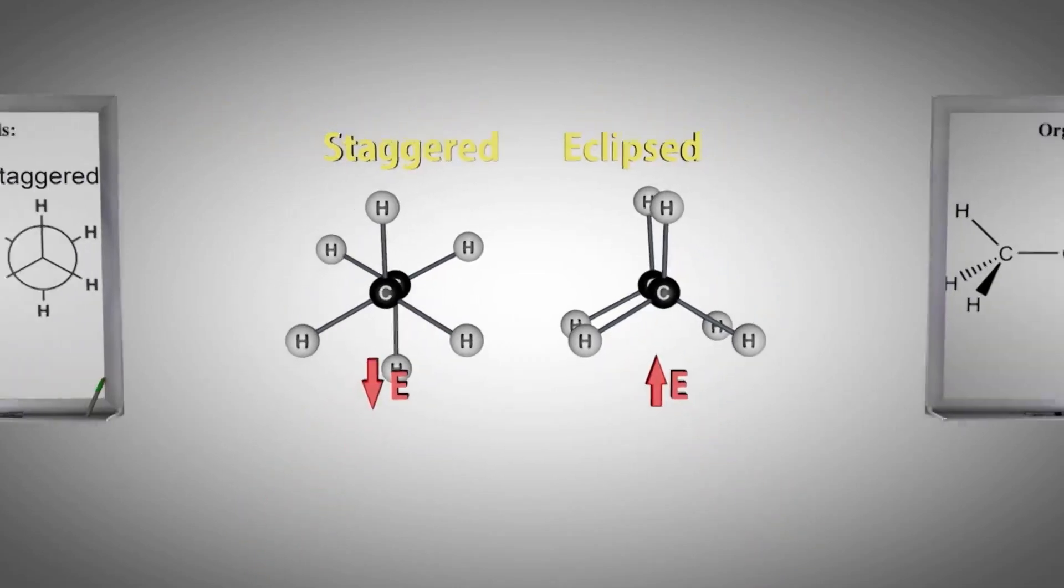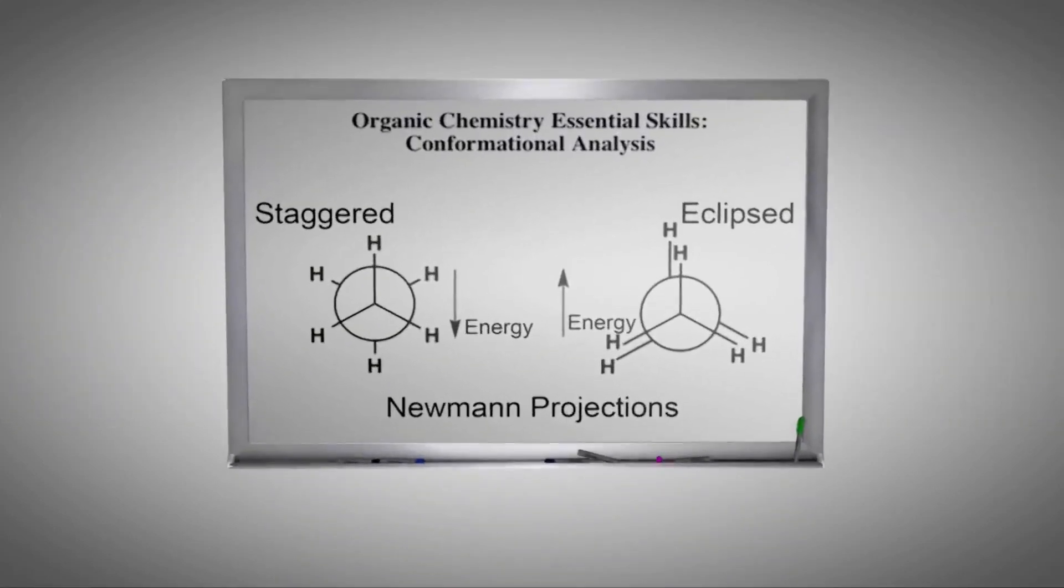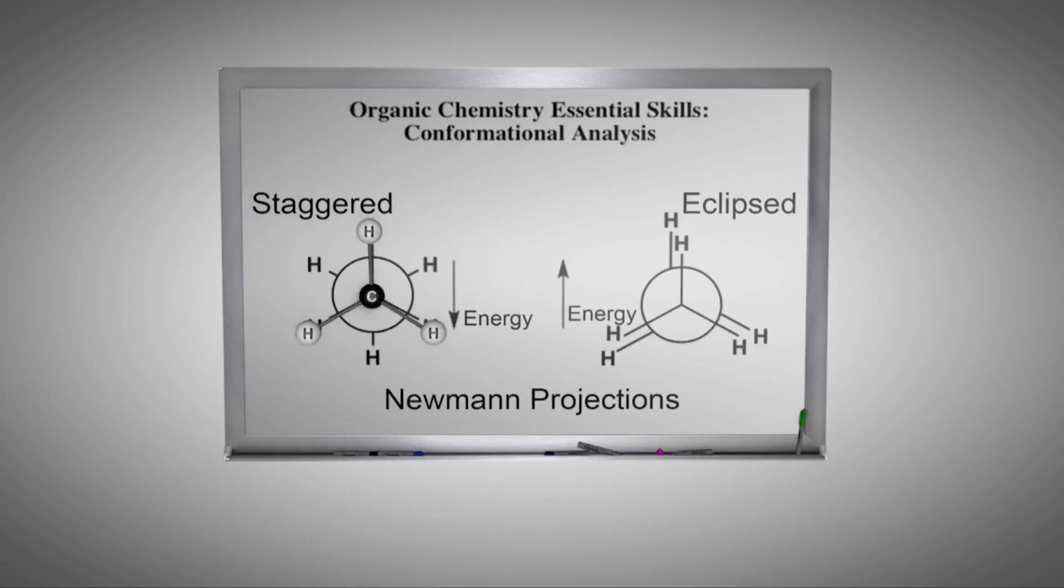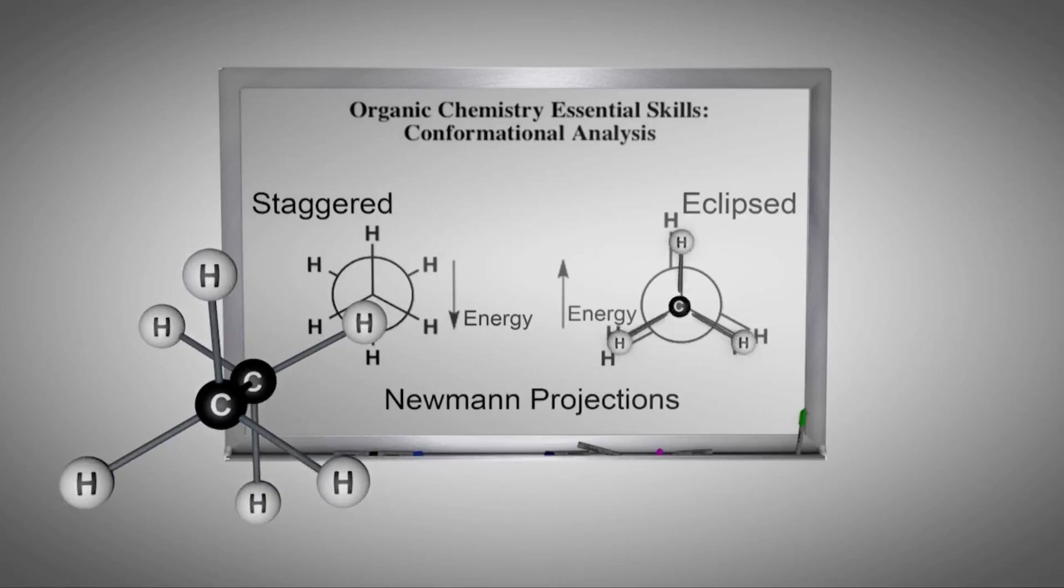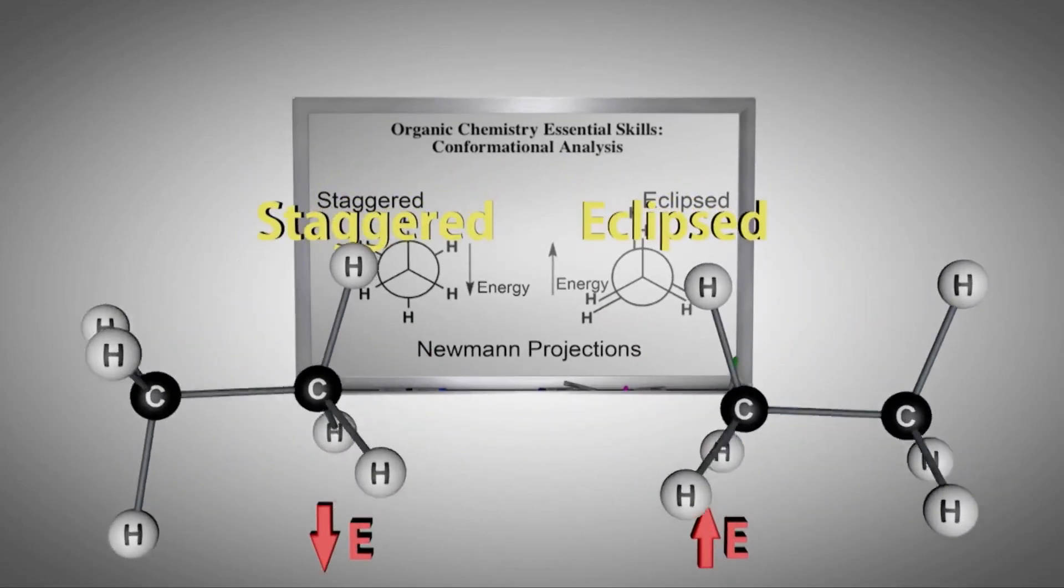When molecules are viewed down the carbon-carbon sigma bond, we call this a Newman projection. Often, you may see your instructor represent the staggered and eclipsed Newman projections on the whiteboard as shown. It is important that the student makes the connection between the 2D whiteboard and the molecule in 3D.